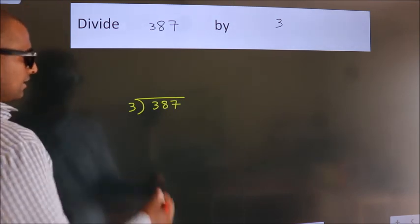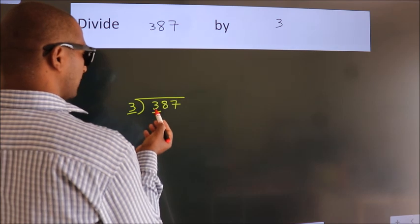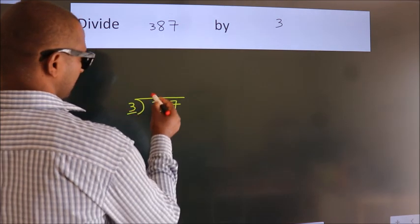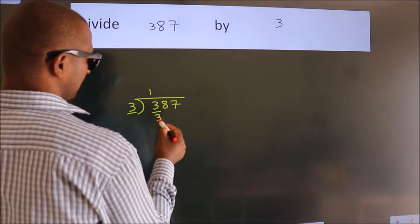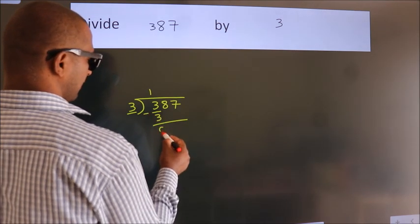Next, here we have 3, here 3. When do we get 3? In 3 table, 3 once, 3. Now, we should subtract. We get 0.